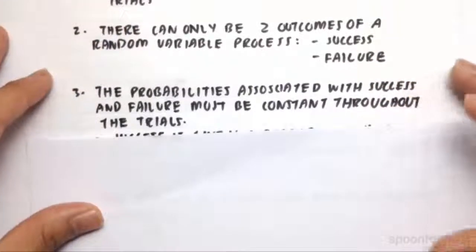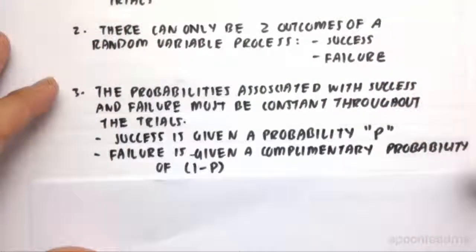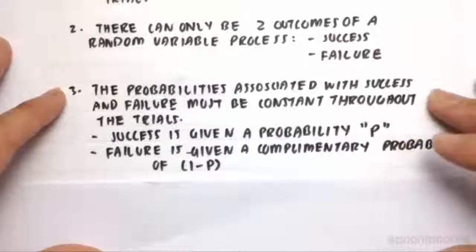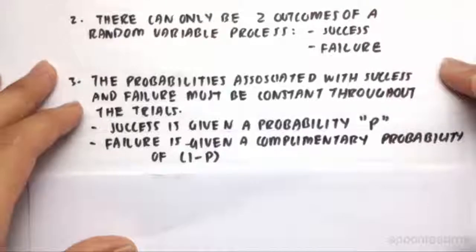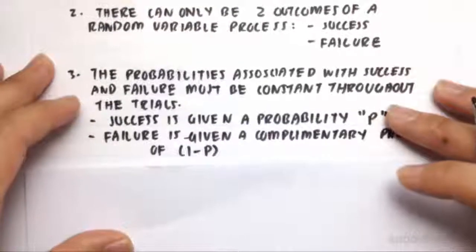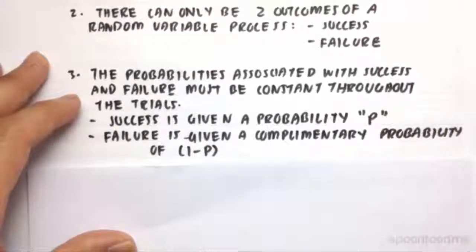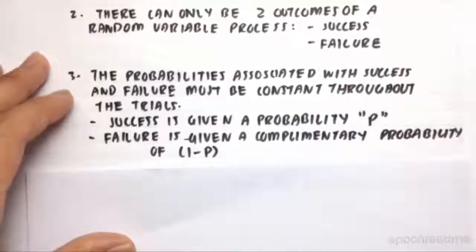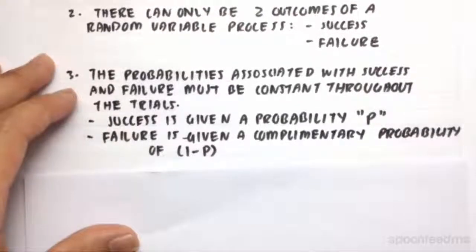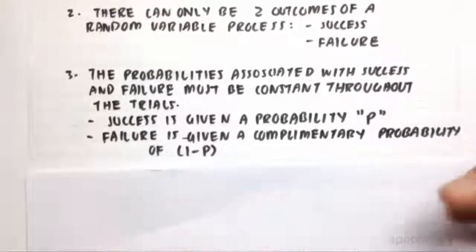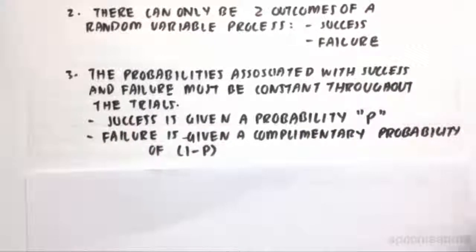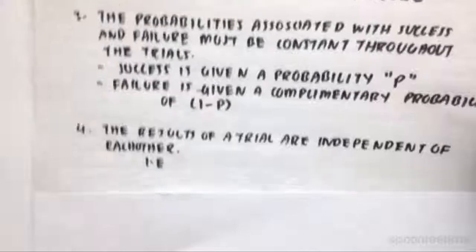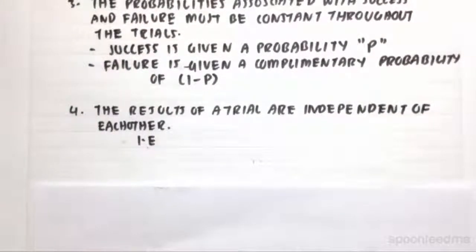Third, the probabilities associated with success and failure must be constant throughout the trials. If success is given as probability P for rolling the dice, the probability of rolling a 6 must remain 1 in 6 throughout - it can't change. The same applies to failure: the probability of not rolling a 6, or 1 minus P, must also remain constant throughout the binomial distribution trials.